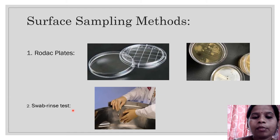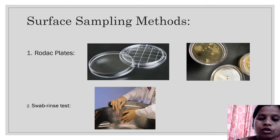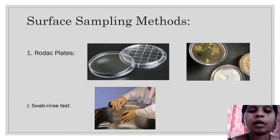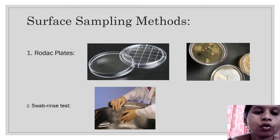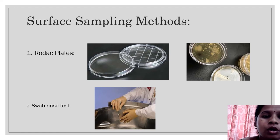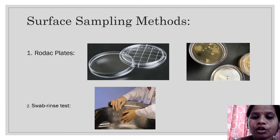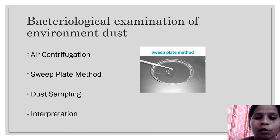The second surface sampling method is the swab rinse test. A sterile cotton swab is used to take a sample from the surface. The swab material is then allowed to grow on culture media on a solid plate for determination. The purpose of this environmental control is to monitor and minimize contamination. Lesser potential of contamination gives assurance that the product is sterile and safe. The sterility test can also be used to confirm the sterility of the product.